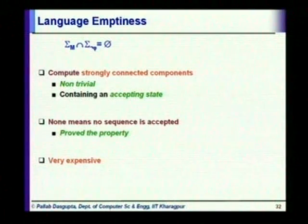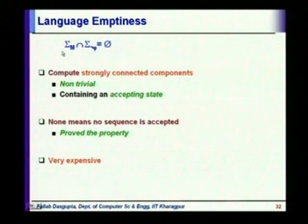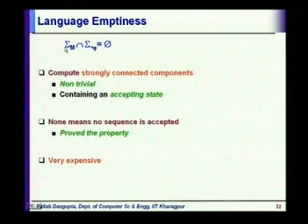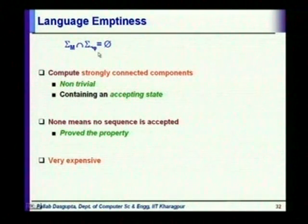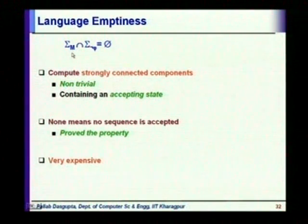In this lecture we will continue with the tableau procedure for model checking of LTL properties and then look into CTL model checking. To recall what we did in the last lecture, our strategy for model checking LTL properties is that we extract a state machine from the implementation, create a tableau or an automaton from the negation of the property, and then check the emptiness of the language at the intersection of the language accepted by the automaton and the implementation.